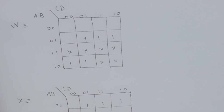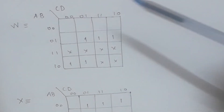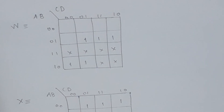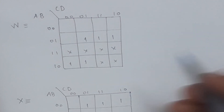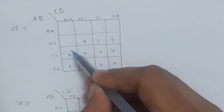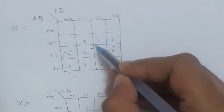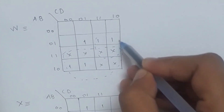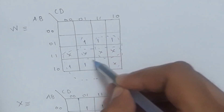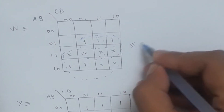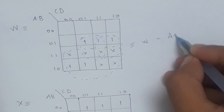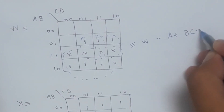Here is the K-map of W. Let me start minimizing the W circuit. We have an octet, two quadruples, and one additional grouping. The minimized expression for W is: A + BC + BD.